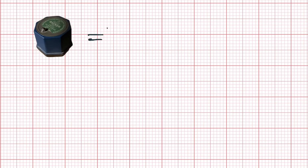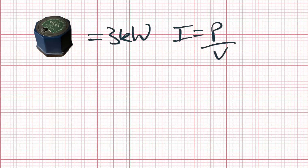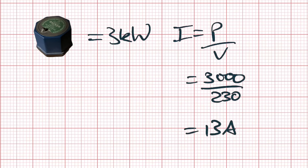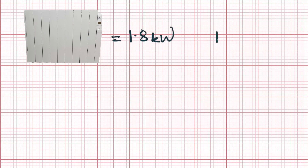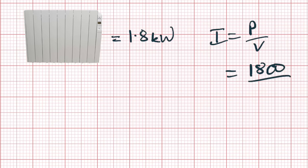First of all we need to figure out what the total current demand will be for each circuit. For some circuits that's really easy - for example the immersion heater is a fixed load of 3 kilowatts, so using the power formula I = P/V, we find 3000 divided by 230 is 13 amps. So when it's on, that's how much it's drawing. The oil-filled heater is simple as well: 1800 watts divided by 230 is 7.8 amps.